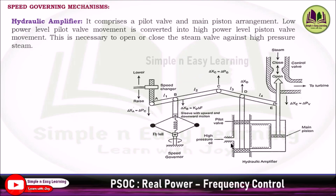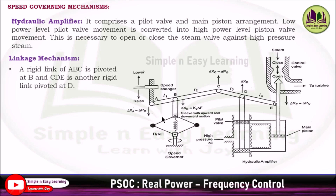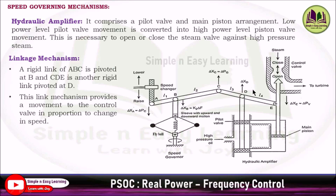The hydraulic amplifier comprises an upper pilot valve and a lower pilot valve. These two valves close the cylinder opening, and the main piston is inside the cylinder. High pressure oil enters through this inlet. These pilot valves are called low power level pilot valves. The low power level pilot valve movement is converted into high power level piston movement, so that it can open the steam valve and allow more steam to enter the turbine.